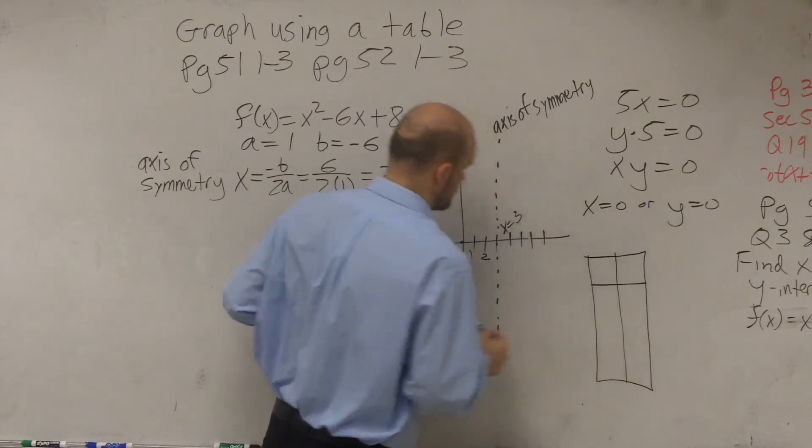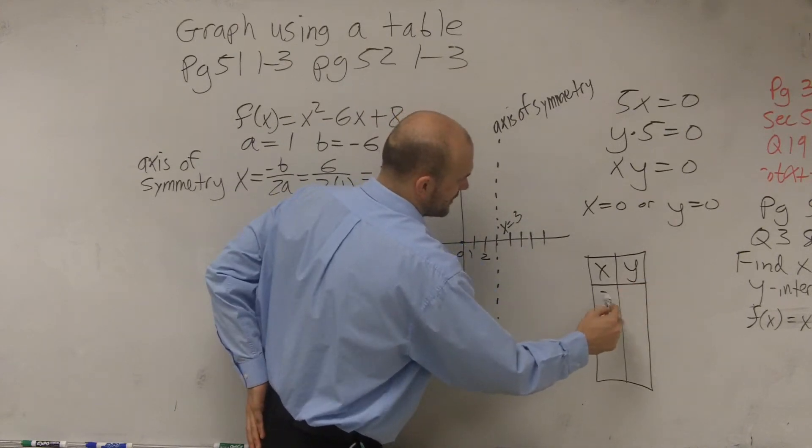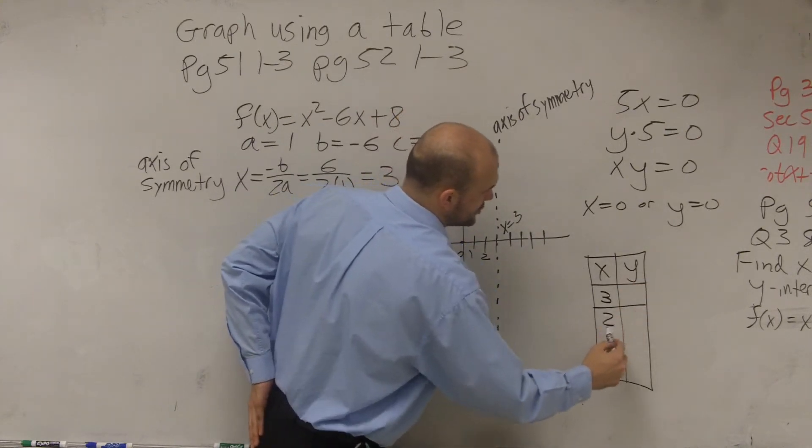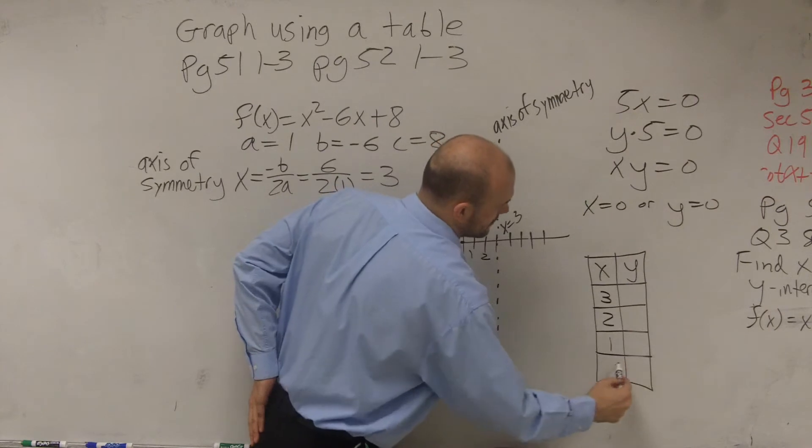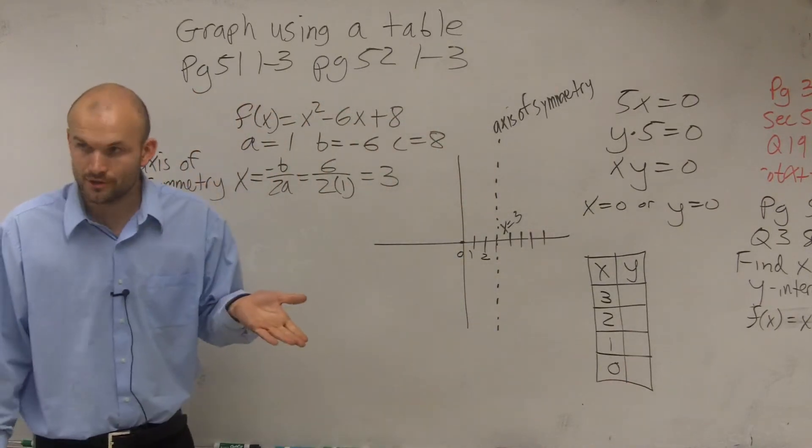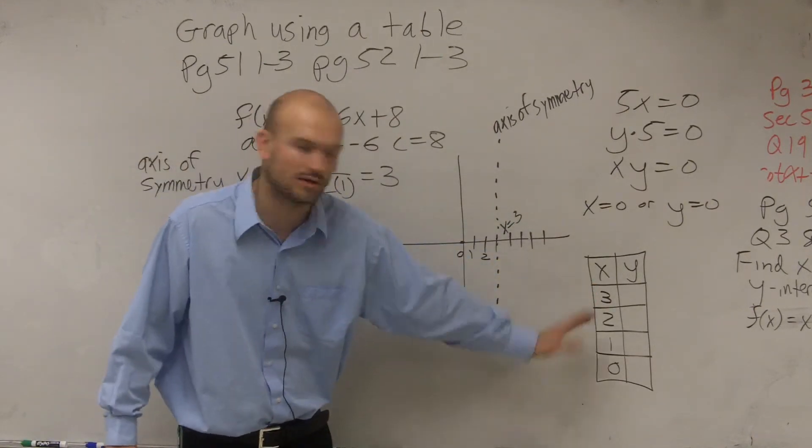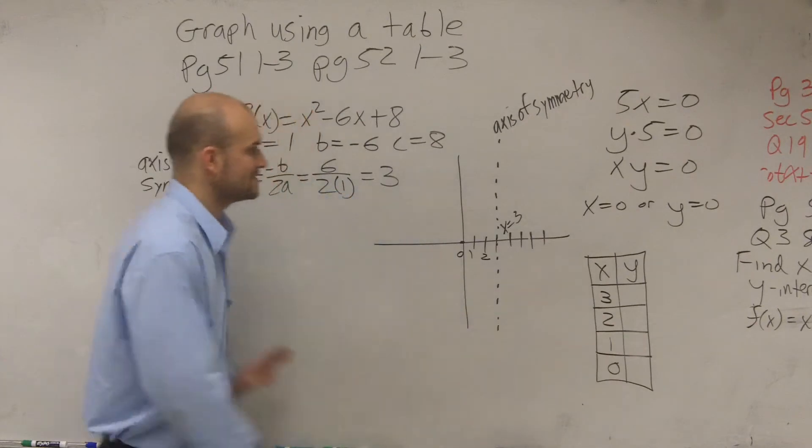So what you're going to do is we're going to have a table. So what I did is we already chose - we have an x and a y table. We have 3, then we're going to pick two points to the left. And actually, I'm going to pick three points to the left. So what we're going to do is we're going to evaluate our function for all four of these values.